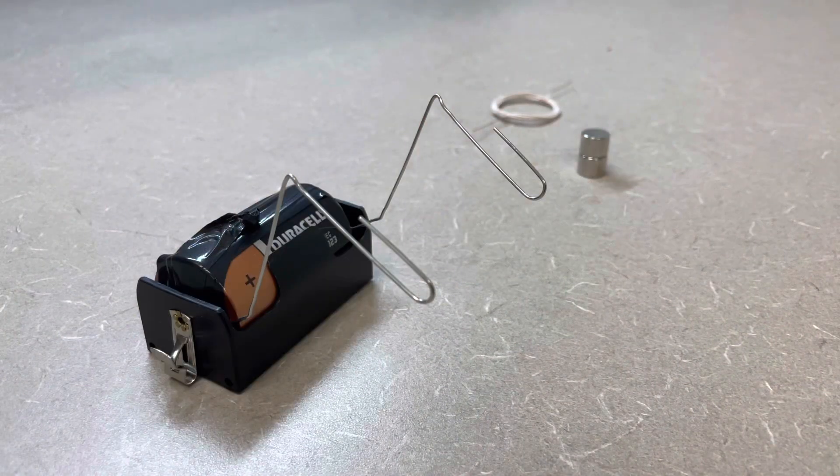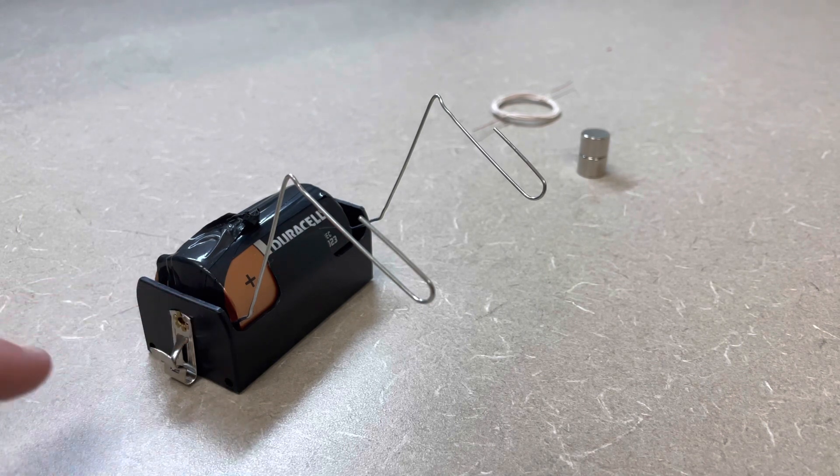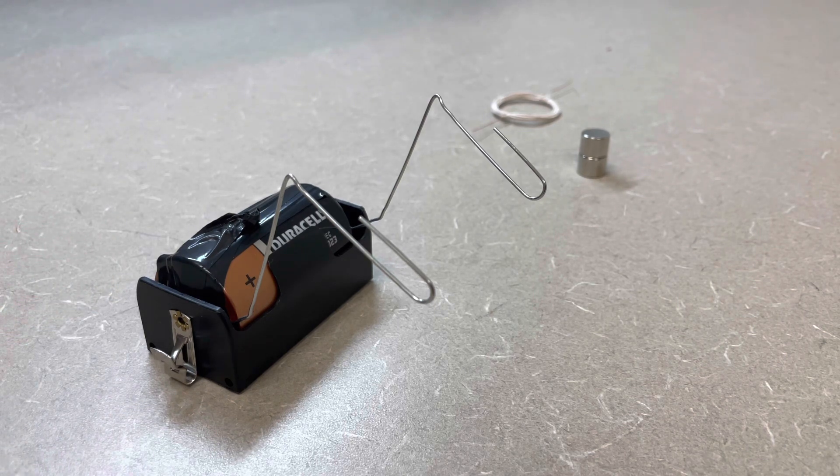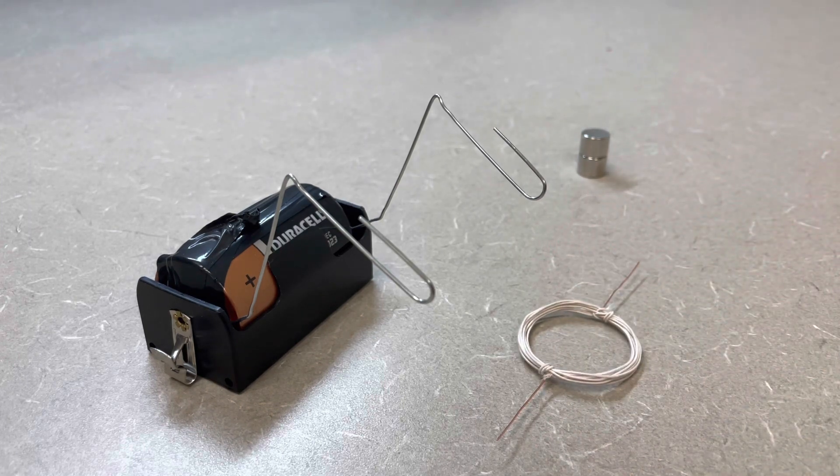For the second demonstration, what I have is a setup with paper clips that are attached to a D cell battery. This housing is just to hold the battery in place exactly where I'd like it. What I have is coiled wire that is insulated as it's wrapped around in a circle, kind of making a solenoid.